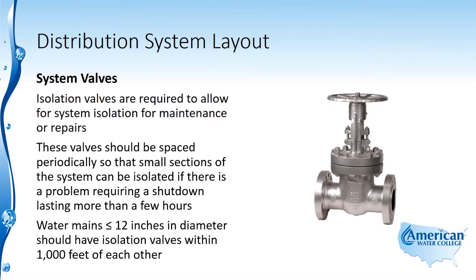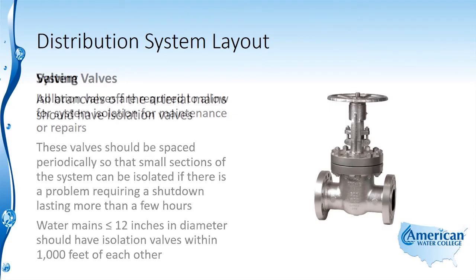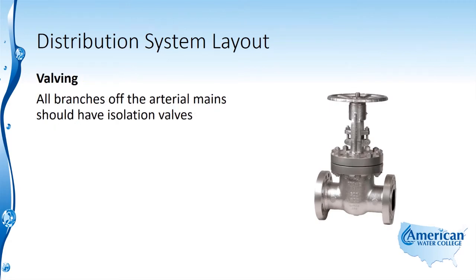Water mains less than or equal to 12 inches in diameter should have isolation valves within 1,000 feet of each other. All branches off the arterial mains should have isolation valves as well.